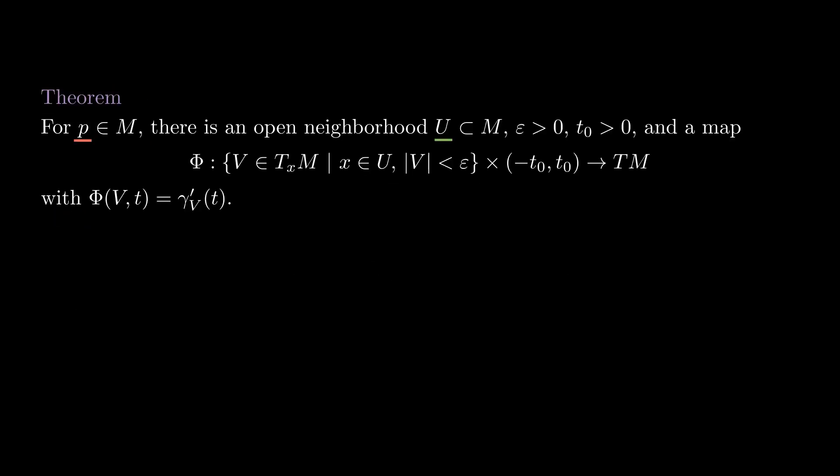Now we go back to the flow of the geodesic vector field. Let delta be epsilon times t0 over 2, and define a map psi from the set of vectors of length less than delta tangent to the manifold at u, times the interval minus 2 to 2, to M as psi of vt equal to the base point of phi of 2v over t0, times tt0 over 2. This is a smooth map, and it is well defined because 2v over t0 has norm less than epsilon, and tt0 over 2 has absolute value less than t0.